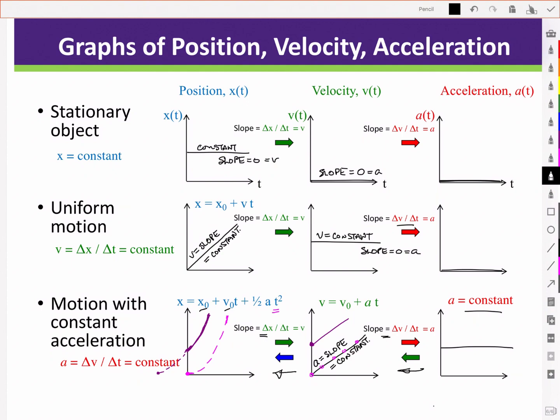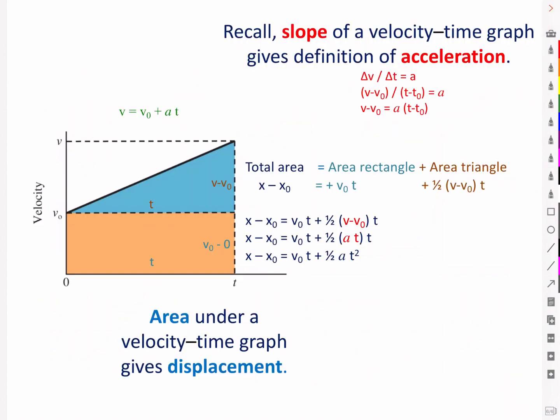Here we have a graph of velocity versus time for constant acceleration, but starting with an initial velocity of v0 that isn't zero. Let's look at the total area under the curve by finding the area of the rectangle, which is v0 times t, and the area of the triangle, which is one half times v minus v0 times t.